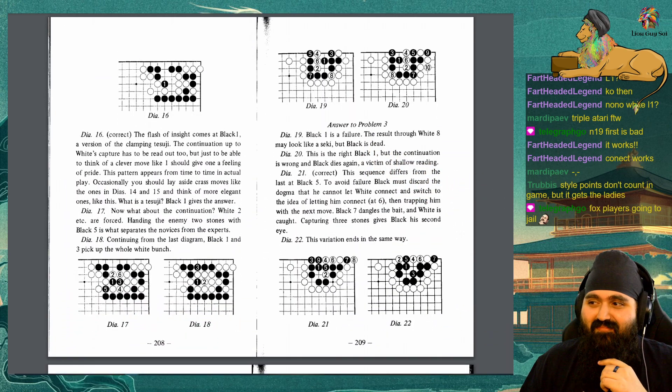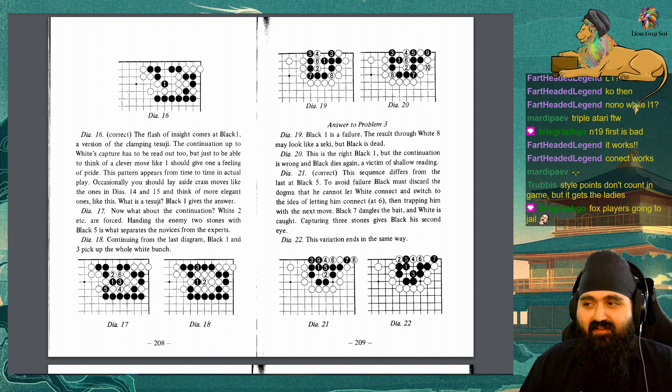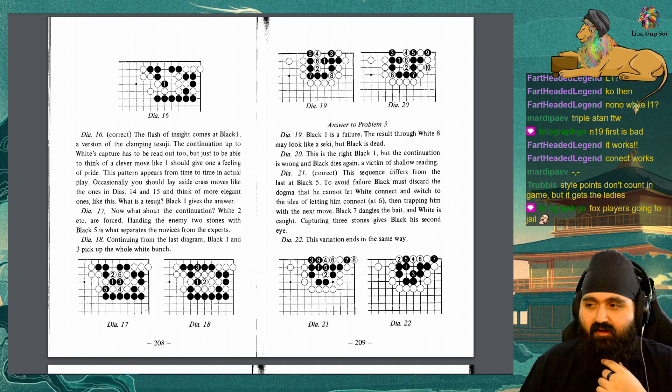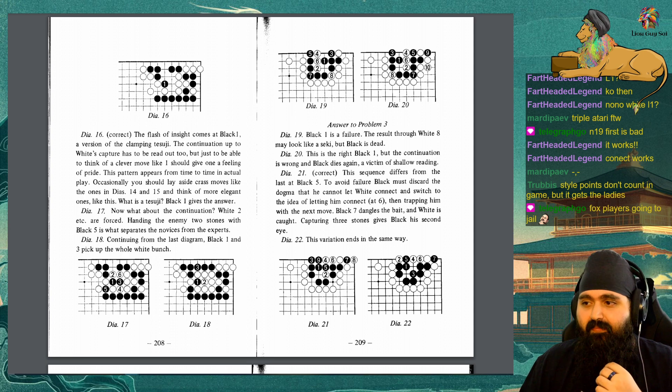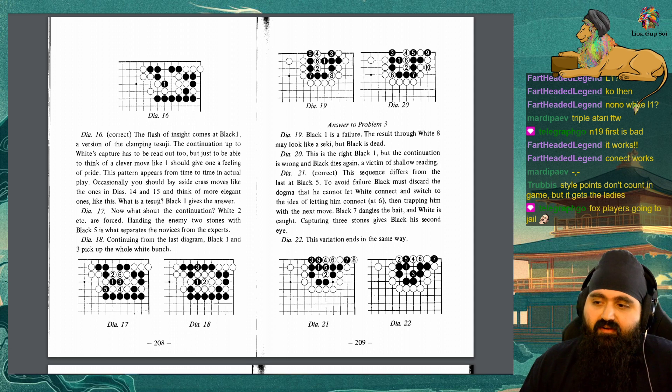Diagram 16: Correct. The flash of insight comes at black 1, a version of the clamping tesuji. The continuation up to white's capture has to be read out too. But just to be able to think of a clever move like 1 should give one a feeling of pride. This pattern appears from time to time in actual play. Occasionally, you should lay aside crass moves like the ones in diagrams 14 and 15, and think of more elegant ones like this. What is a tesuji? Black 1 gives the answer. Diagram 17: Now, what about the continuation? White 2, etc. are forced. Handing the enemy 2 stones with black 5 is what separates the novices from the experts. Diagram 18: Continuing from the last diagram, black 1 and 3 pick up the whole white bunch.